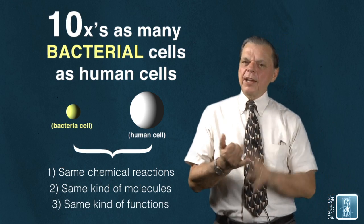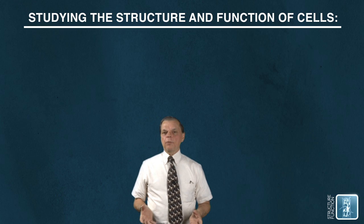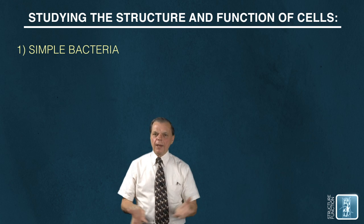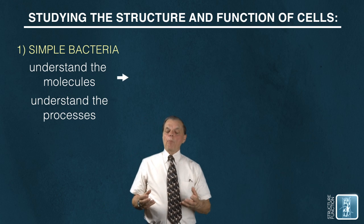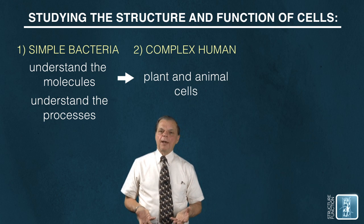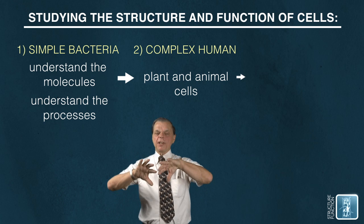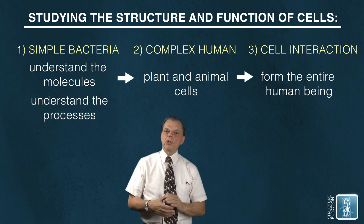So now if we want to actually study cell biology, especially studying the structure and function of cells, it would be logical for us to start with these simple bacteria-like cells, understand the molecules, understand the processes, and then progress to understand more complex cells like a human cell or other plants and animal cells. After we understand that, the next step may be to understand how these cells interact together, they're orchestrated together to form the entire human being.